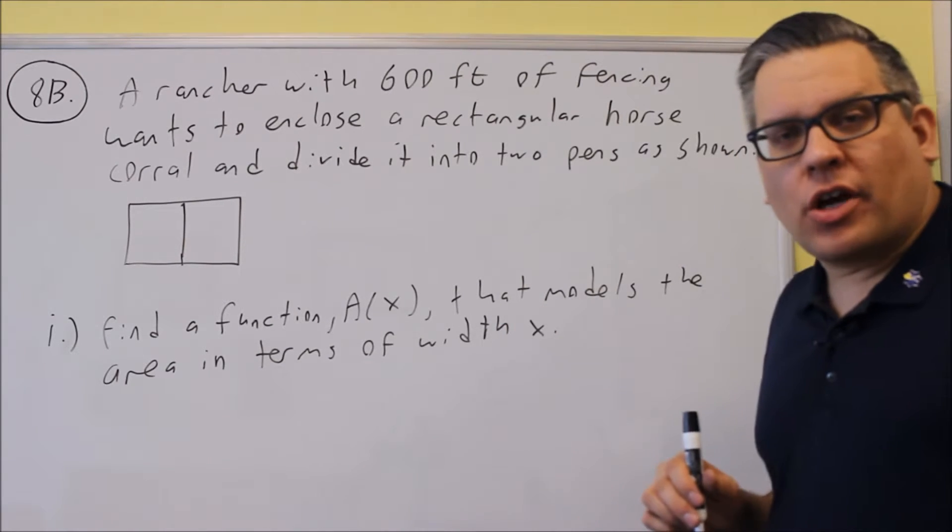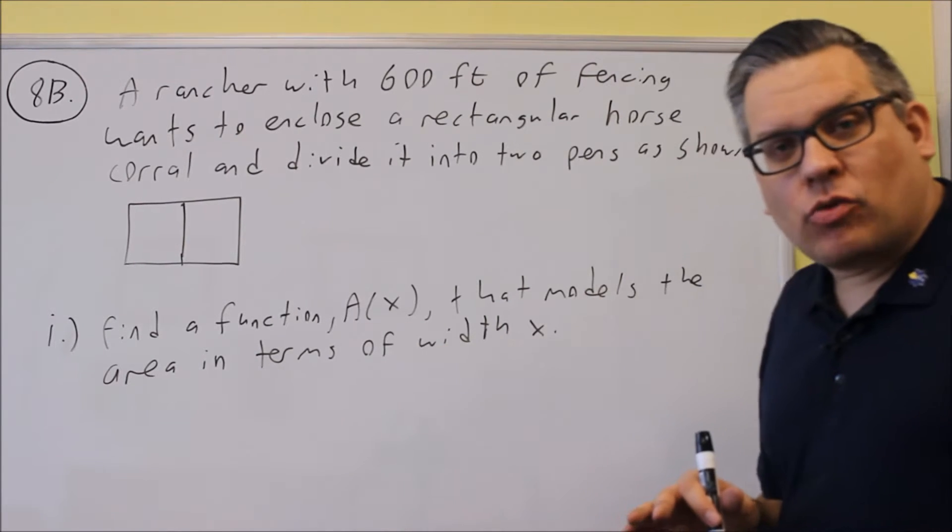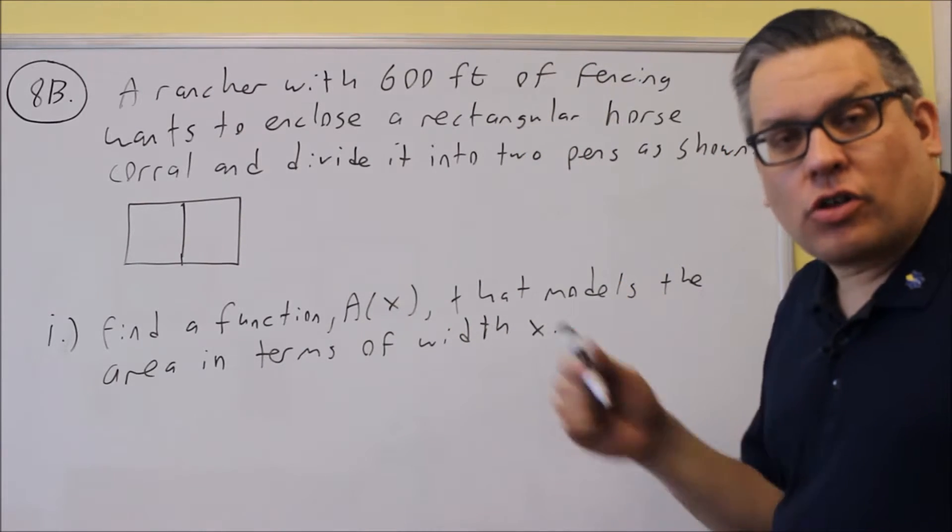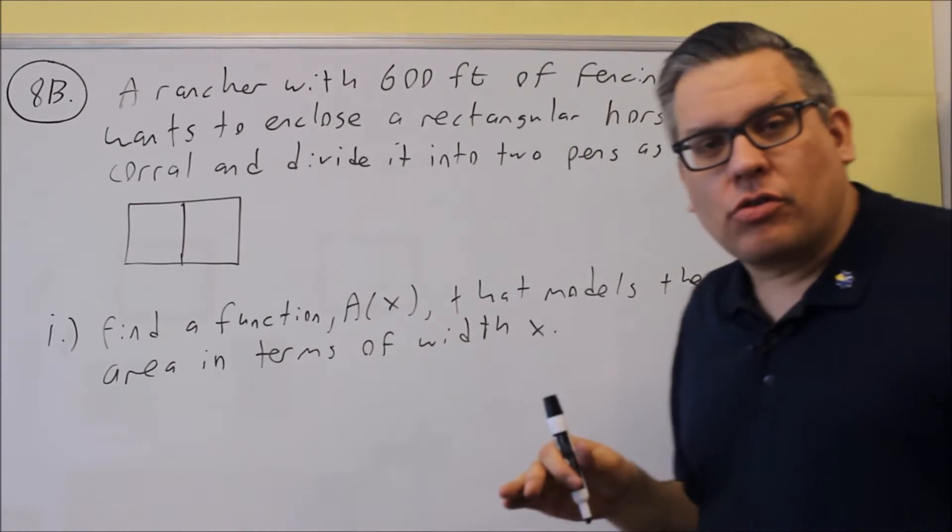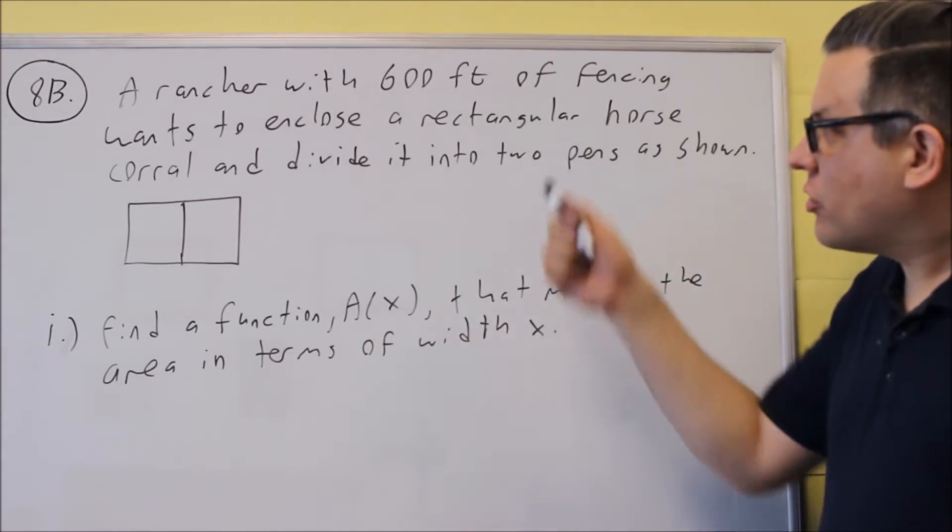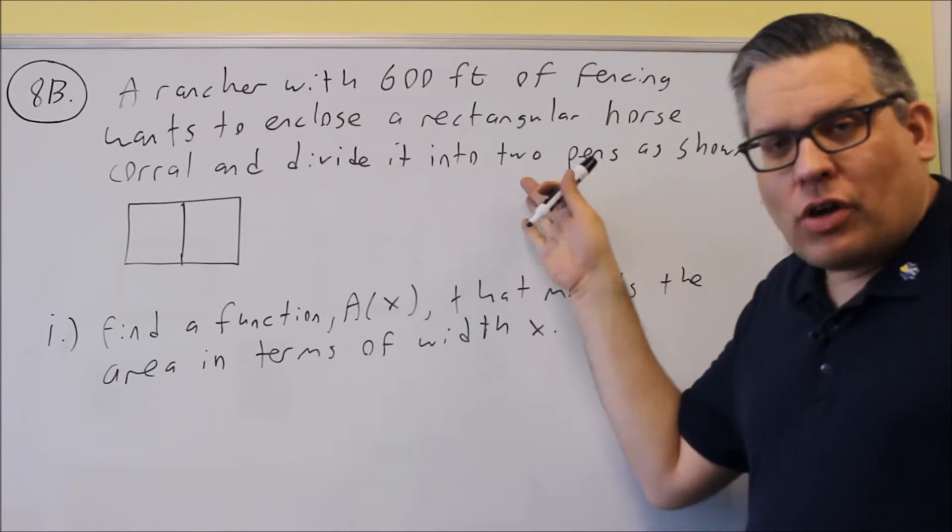So the first one we looked at was that product one, the sum of two numbers, and we find the product. Here's a second type that it could look like on a test. You want to make sure you know how to do both these types, because really they both do the same kind of thing.